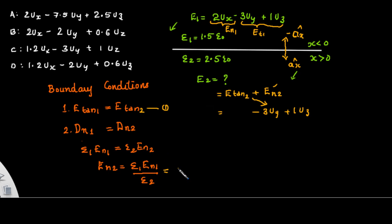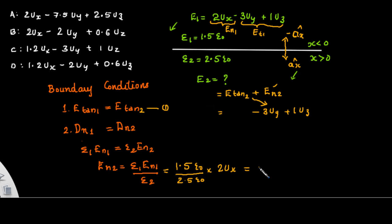The normal component is epsilon 1 divided by epsilon 2 times the normal component in medium 1. That is 1.5 epsilon naught divided by 2.5 epsilon naught, multiplied by 2 a_x, which gives 1.2 a_x. So the normal component is 1.2 a_x, and the correct option is option C.